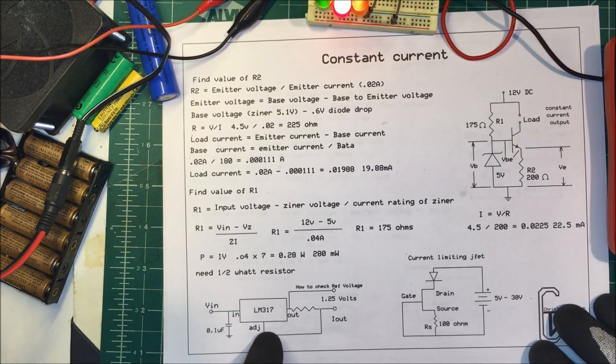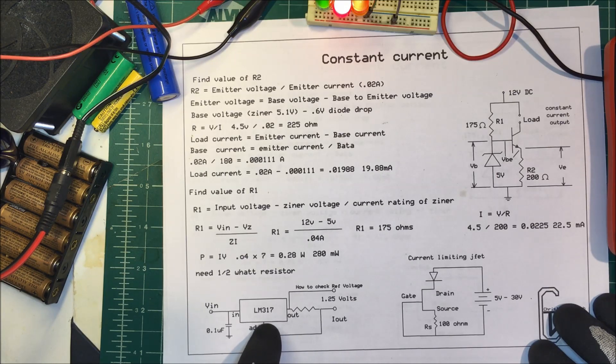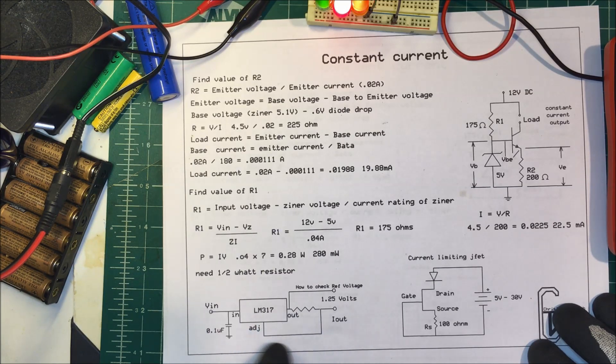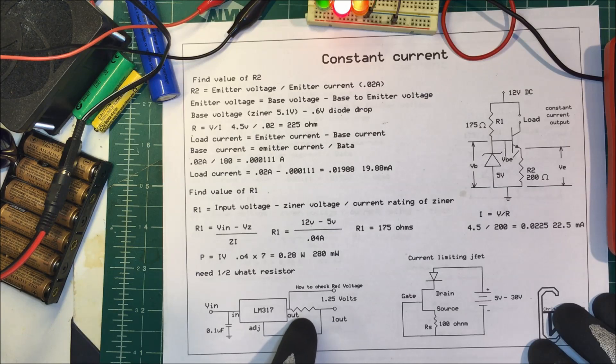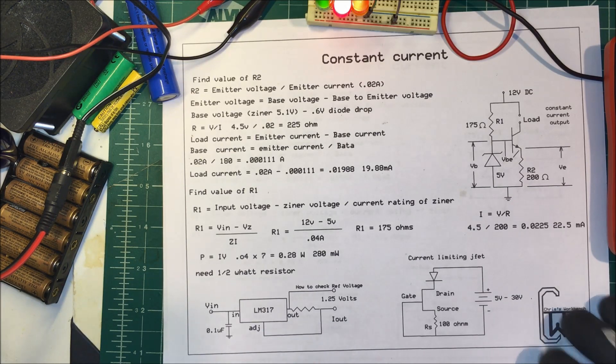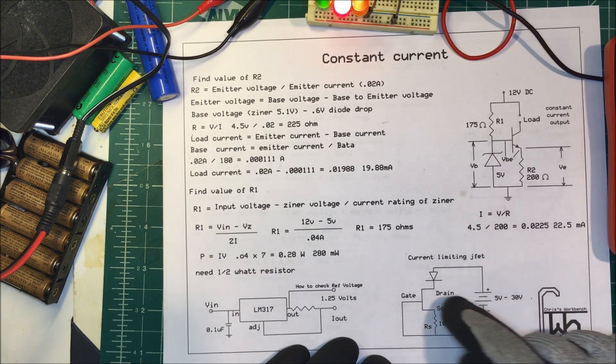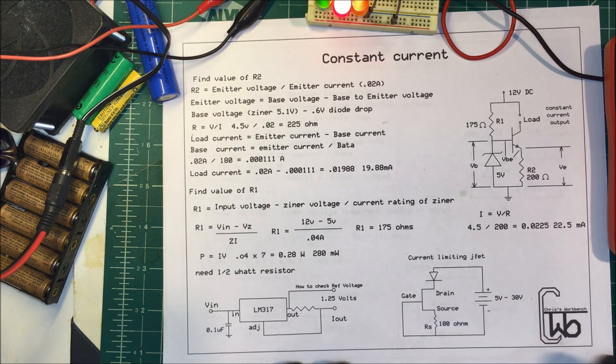In the past we've done it with an LM317. On that one you have your resistance here and these units have a reference voltage of 1.5 volts in them, and we're dropping that reference voltage across this resistor here and that determines the current output. And we've done it before with the current limiting JFET - there's a video on that one too. But that's constant current.